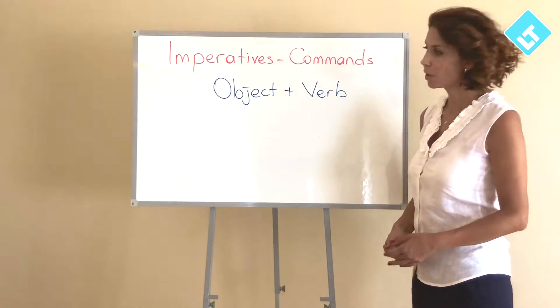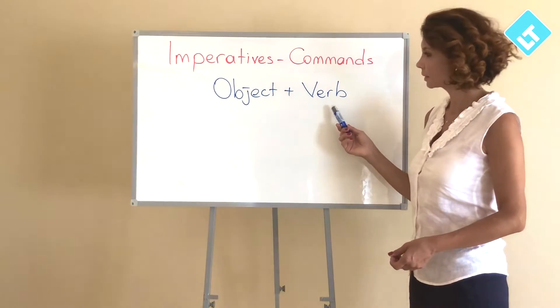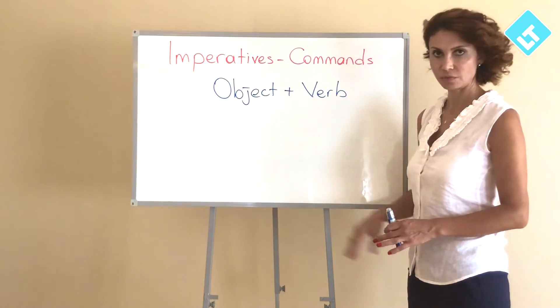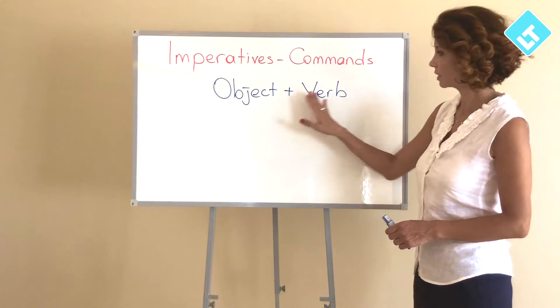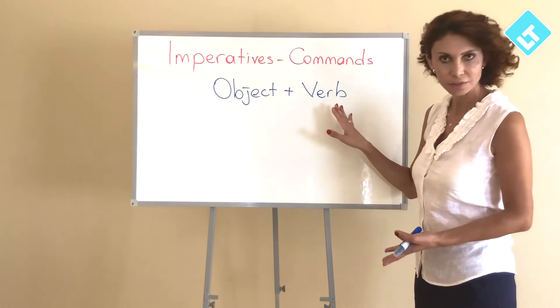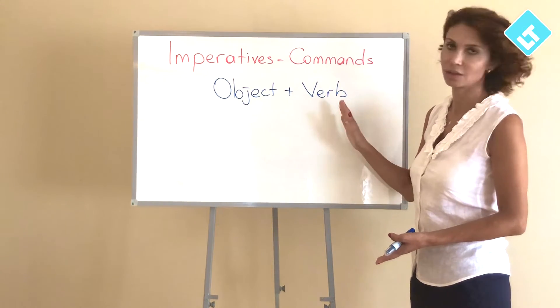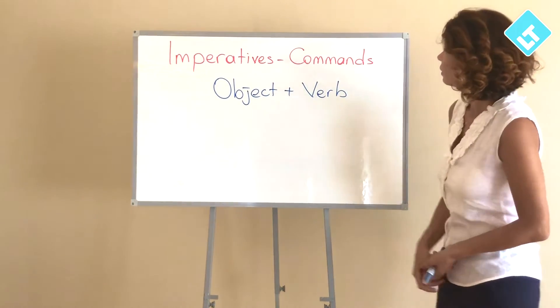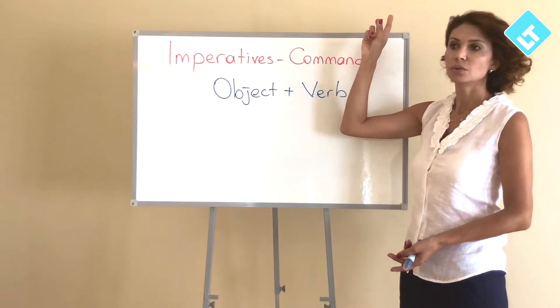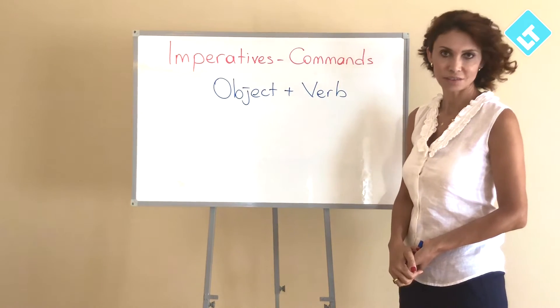You can also make a simple sentence by adding objects to the sentence. But in Turkish we say object first and then verb. Object plus verb, because Turkish word order is subject, object, and verb. The verb takes a place at the end in the sentence. I recommend this video to learn more about Turkish sentence structure.